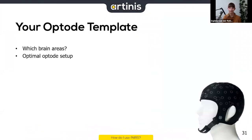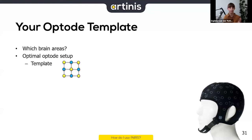Now that you have an idea of what the devices look like, let's talk about the optode template. This is the time to start thinking about which brain areas you'd like to measure and what the optimal optode setup is. For example, with the Brite 24, one of the most-used templates is the 2×12 template.